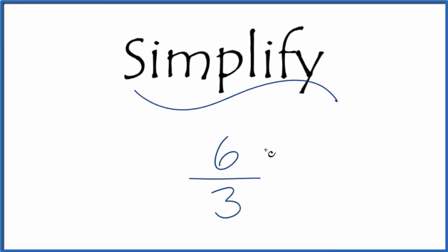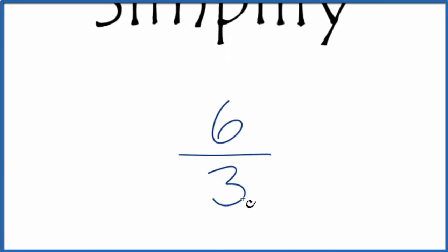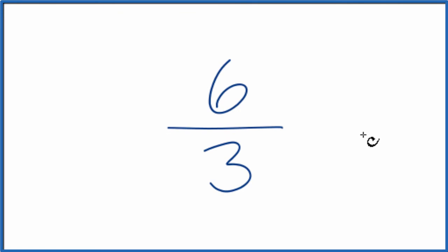So let's simplify the fraction 6 thirds. What we're trying to do is find another fraction that's equivalent, the same as 6 over 3, but we've reduced it to lowest terms.